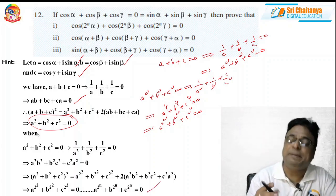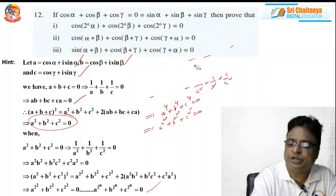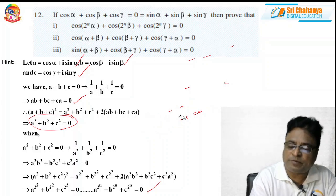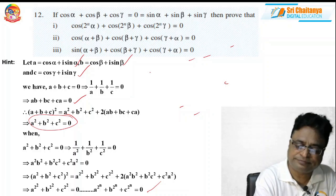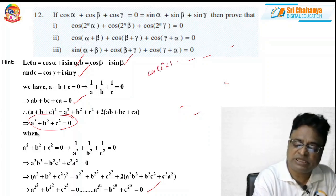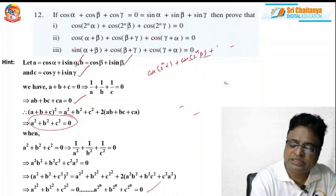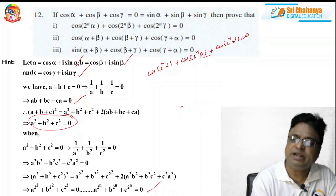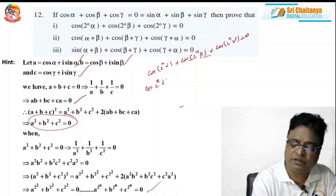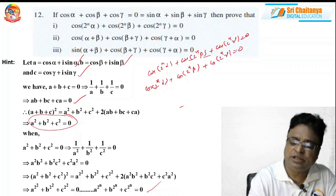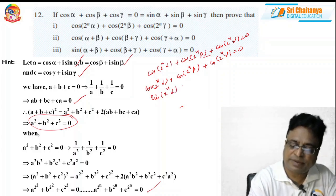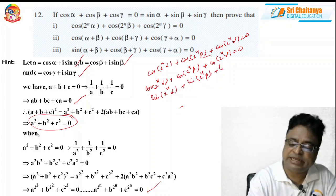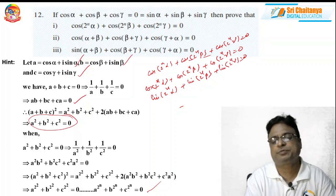Now the key step: A^(2ⁿ) is nothing but cis(2ⁿα), so cis(2ⁿα) + cis(2ⁿβ) + cis(2ⁿγ) = 0. Now equate real and imaginary parts on both sides. The real part gives cos(2ⁿα) + cos(2ⁿβ) + cos(2ⁿγ) = 0. Similarly, equating the imaginary part gives sin(2ⁿα) + sin(2ⁿβ) + sin(2ⁿγ) = 0. That is all about the first part.